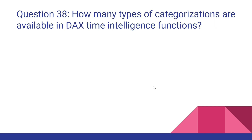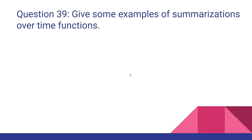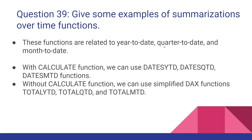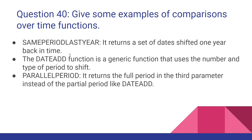How many types of categorization are available in DAX time intelligence functions? There are two main categories: summarizations over time and comparisons over time. For summarization over time, these functions relate to year-to-date, quarter-to-date, and month-to-date. With CALCULATE you can use DATESYTD, DATESQTD, and DATESMTD. Without CALCULATE you can use the simplified functions TOTALYTD, TOTALQTD, and TOTALMTD. For comparison over time, examples include SAMEPERIODLASTYEAR, DATEADD, and PARALLELPERIOD.